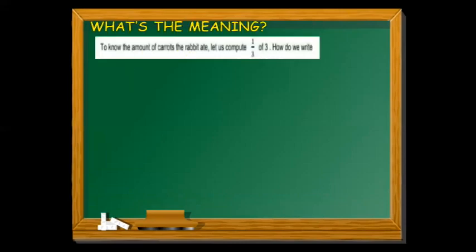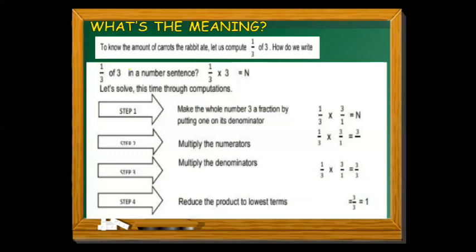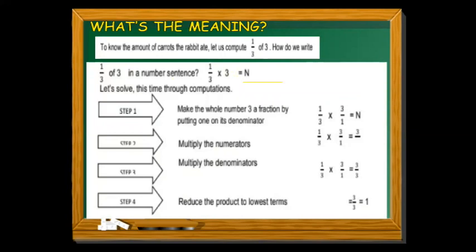To find the amount of carrots the rabbit ate, we compute one-third of three. In a number sentence: one-third times three equals n. We will multiply one-third by three, and solve this through computation.